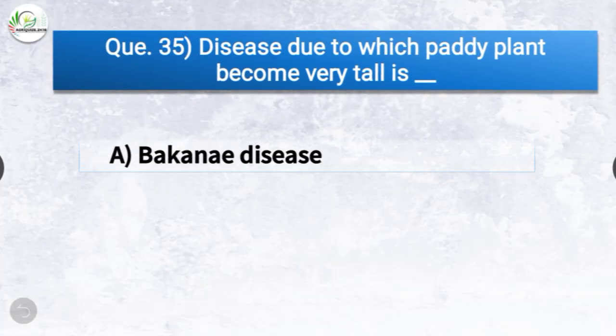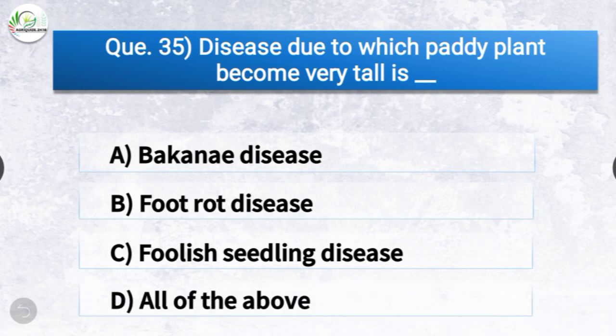Question number thirty-five: Disease due to which paddy plant becomes very tall is dash. The options are bakanae disease, foot rot disease, foolish seedling disease, or all of the above. The correct answer is option D, all of the above. Bakanae disease, foot rot disease, and foolish seedling disease are all names of the same disease.